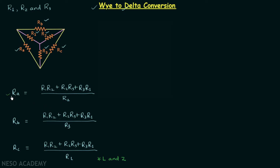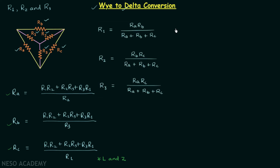Now we are going to derive ra, rb, and rc. In the last lecture, we obtained r1, r2, and r3 in terms of ra, rb, and rc — that is, we had the delta network and derived the Y network. Let's call those three formulas equation number 1, equation number 2, and equation number 3. I want to multiply equation number 1 and equation number 2.